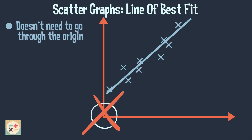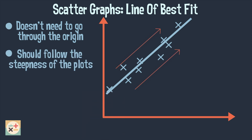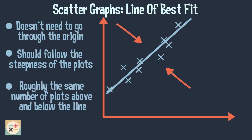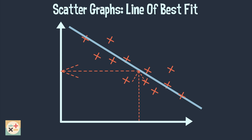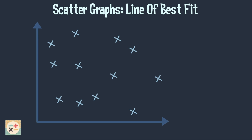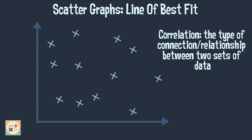It should follow the steepness of the plots, and there should be roughly the same number of plots above the line as there are below. We can now use the line of best fit to estimate values based on the data. But what if our scatter plot looks like this one? As there is no correlation, we are unable to draw a line of best fit.